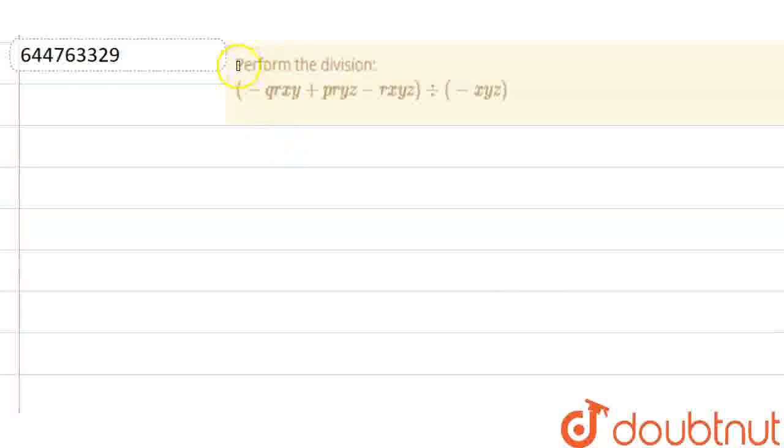Hello everyone, so our question is, perform the division, minus QRXY plus PRYZ minus RXYZ divided by minus XYZ. Now, this can be written as minus QRXY plus PRYZ minus RXYZ divided by minus XYZ.